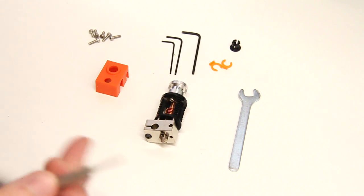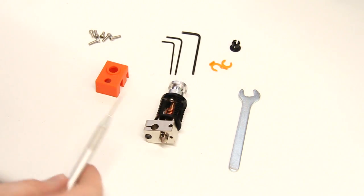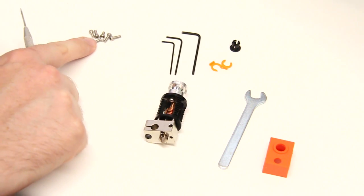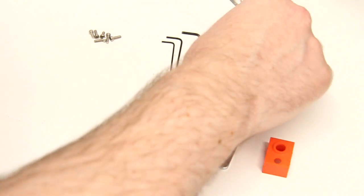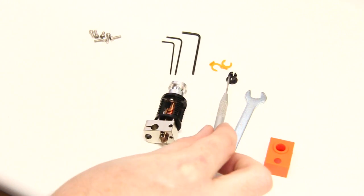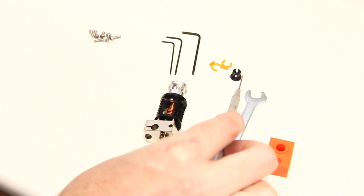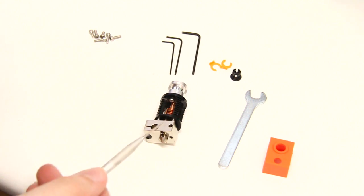So this is what you get in the box basically. A sock, some spare screws, some Allen keys, your Bowden clip or coupler and a couple of clips. And then the hotend itself and a 0.4 copper plated nozzle.